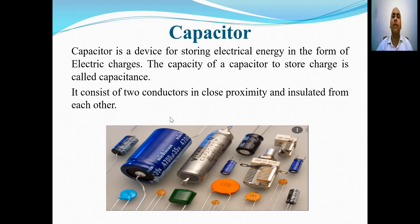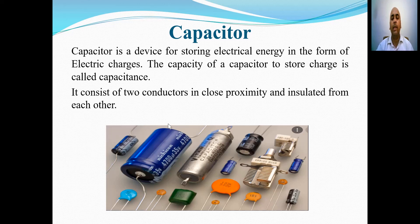The next component to discuss is the capacitor. A capacitor is basically a device for storing electrical energy in the form of electrical charges. The capacity of a capacitor to store charge is called capacitance. A capacitor basically consists of two conductors in close proximity, insulated from each other.